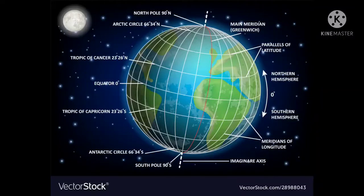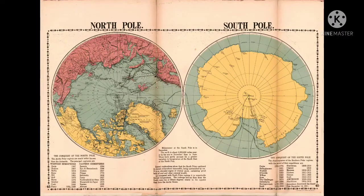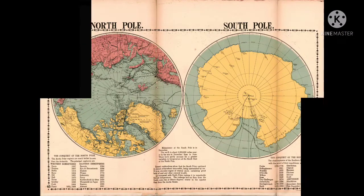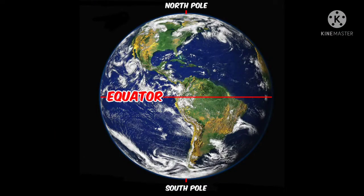We heard two terms: poles and equator. The earth rotates on its axis, and the ends of the axis are known as poles. There are two fixed points on the earth called the north pole and south pole. The equator is an imaginary line drawn midway between the poles, running west to east.